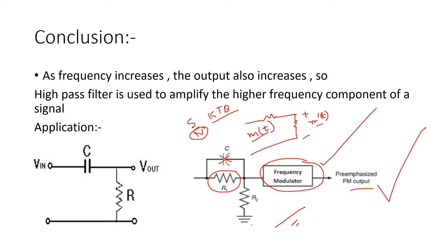Now in the demodulator circuit, after FM demodulation, the message signal will have the high frequency part amplified and the low frequency part as it is. So in the receiver circuit we need to decrease the high frequency component, since we amplified it at the transmitter. To decrease the high frequency component, we can use a simple low pass filter.